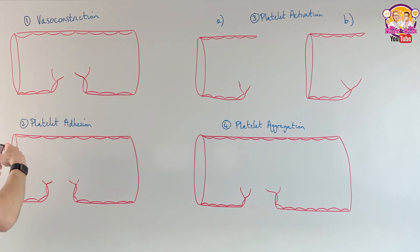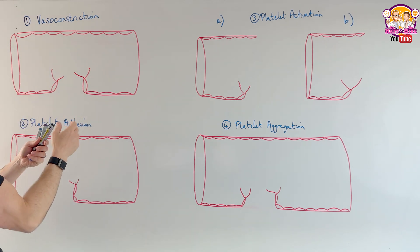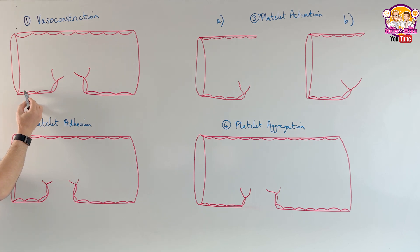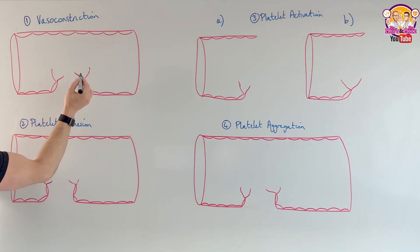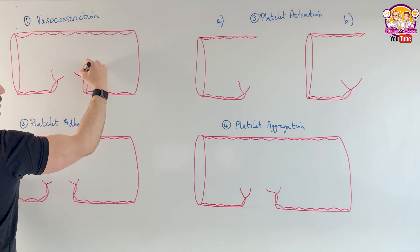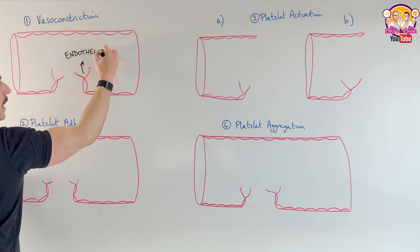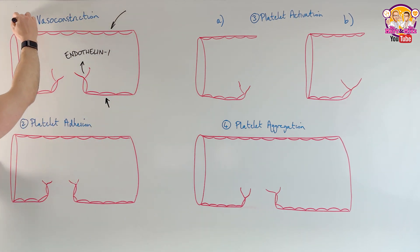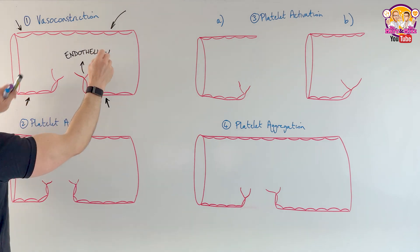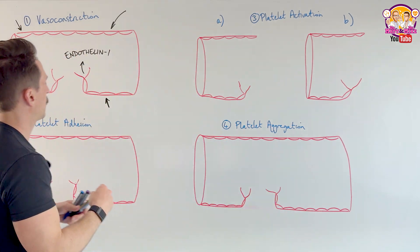Let's begin with vasoconstriction. When you've got damage to a blood vessel, the very first thing that happens is a vasospasm — the blood vessel constricts to limit blood moving past. How does this happen? Lining the inside of blood vessels we have endothelial cells. When they are damaged and burst open, they release chemicals. One important chemical is endothelin-1, which is a potent vasoconstrictor — it tells the blood vessel to constrict, narrowing it and limiting blood flow. It won't stop bleeding entirely, but it helps in the early stages.